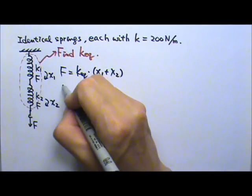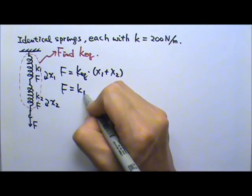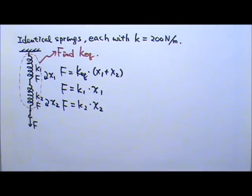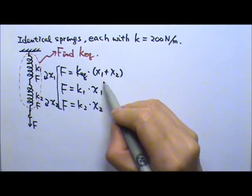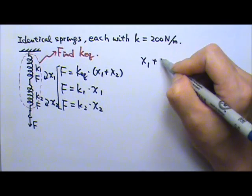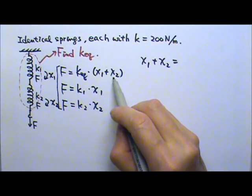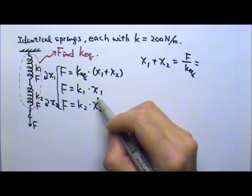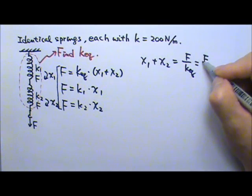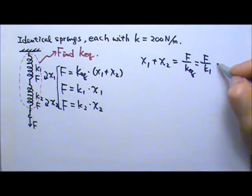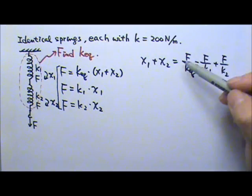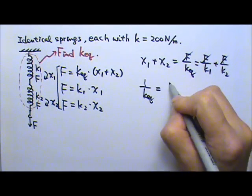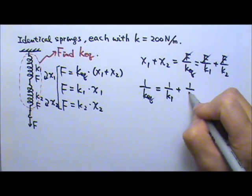For the first spring, F equals K1 times x1. For the second spring, F equals K2 times x2. So x1 plus x2 equals F divided by K equivalent. From the individual spring equations, x1 equals F over K1 and x2 equals F over K2. Because all the forces are the same, we get: 1 over K equivalent equals 1 over K1 plus 1 over K2.